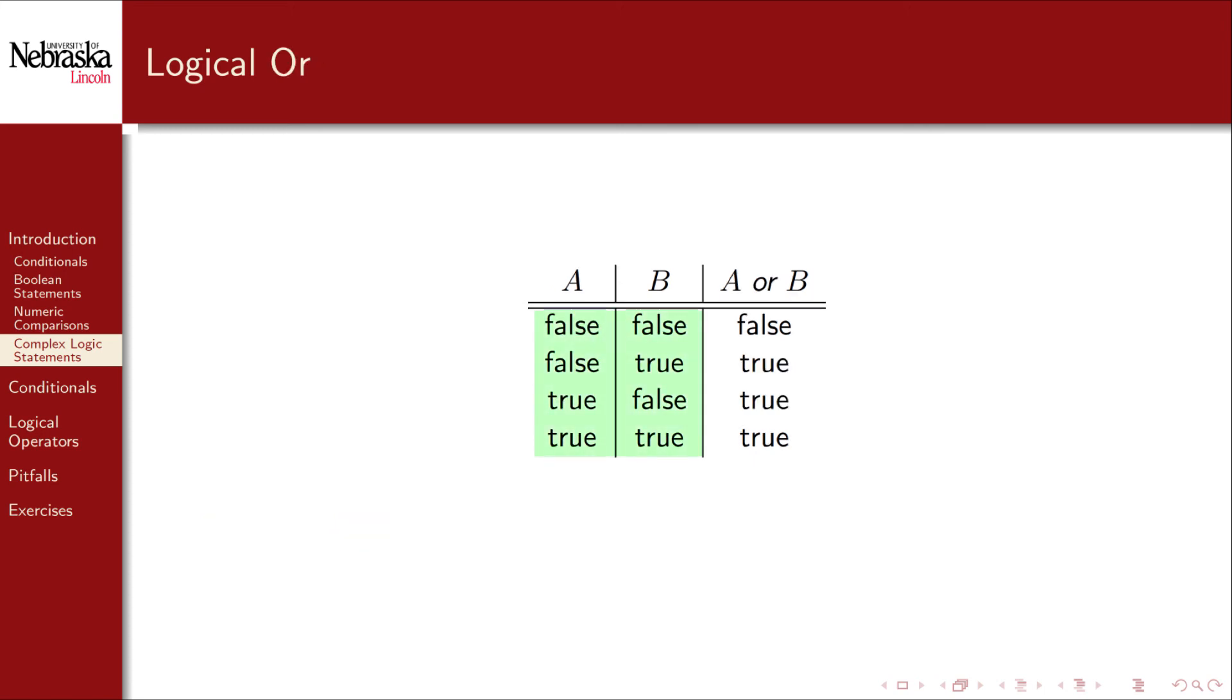The logical OR operator also works on two operands with the same four possible truth values. However, the result of the logical OR is true if at least one of the operands is true. Observe that if both operands are true, the result is still true. It is only false when both operands are false. In code, we use two vertical lines to denote the logical OR. Sometimes these are referred to either as pipes or Sheffer's strokes.